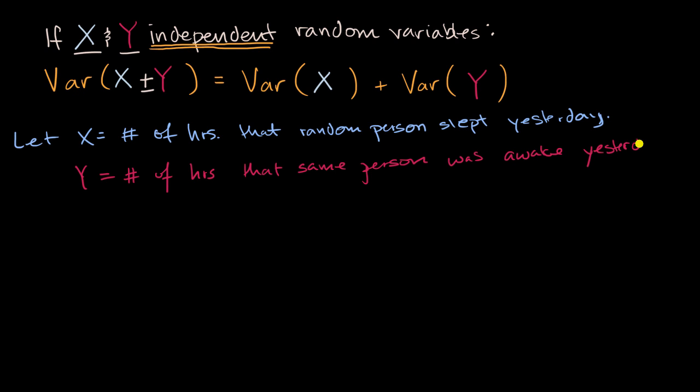Appreciate why these are not independent random variables. One of them is going to completely determine the other. If I slept eight hours yesterday, then I would have been awake for 16 hours. If I slept for 16 hours, then I would have been awake for eight hours.